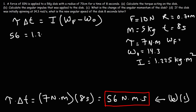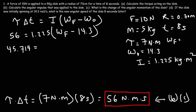Replacing I with 1.225 and omega initial with 14.3, we take 56 divided by 1.225, which gives 45.714. That equals omega final minus 14.3, so omega final is 45.714 plus 14.3, which is approximately 60 radians per second. That's how we calculate the new angular speed of the disk 8 seconds later.